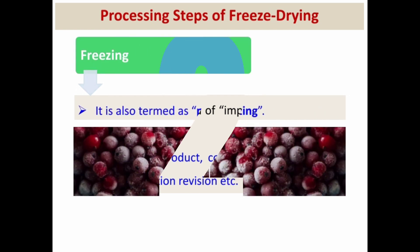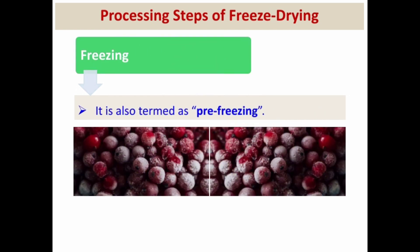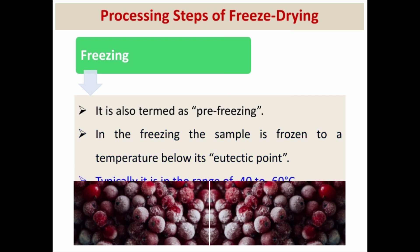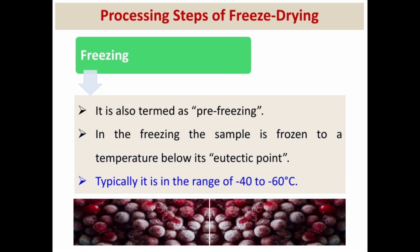The second step of freeze drying is freezing, also termed as pre-freezing. In this step, the sample is frozen to a temperature below its eutectic temperature or eutectic point, typically in the range of minus 40 to minus 60 degrees Celsius.